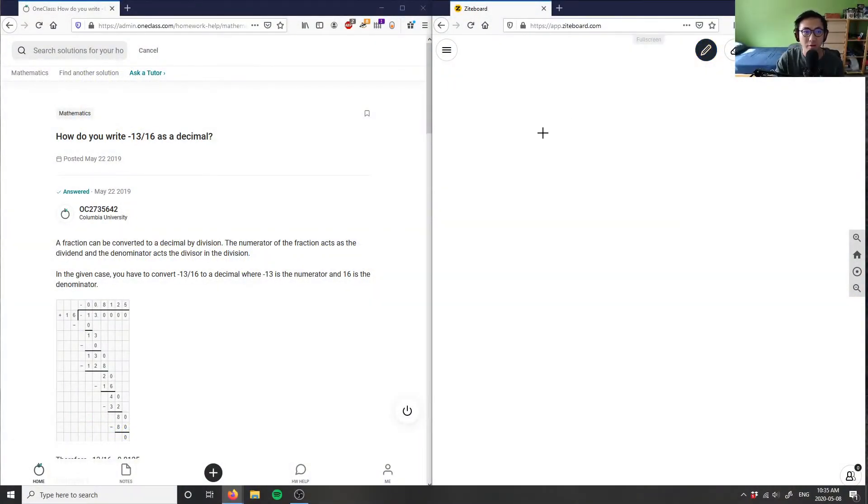Number 9 is asking us, how do you write negative 13 over 16 as a decimal? So write negative 13 over 16 as a decimal. So what we have here is a fraction, and we want to change this to a decimal.